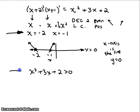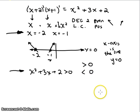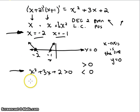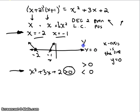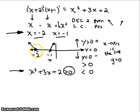Suppose instead of finding where we equal zero, we want to know where we're positive or negative. Positive is where the graph is greater than zero, and negative is where the graph is less than zero. We'll go through the same process to find the zeros — we need a factored polynomial and probably a graph. If y = 0 is the x-axis, then y is greater than zero for all values above it, and less than zero for all values below it.